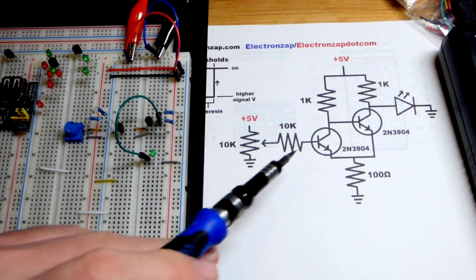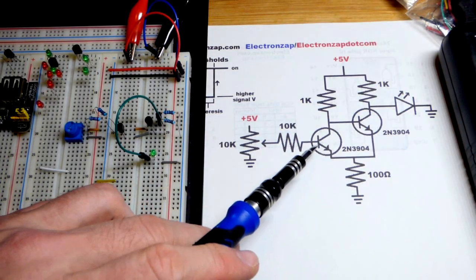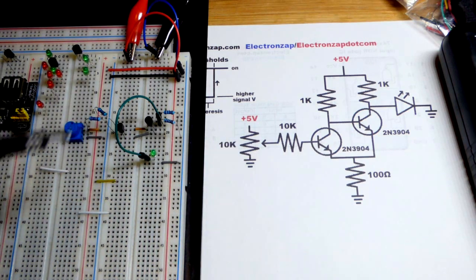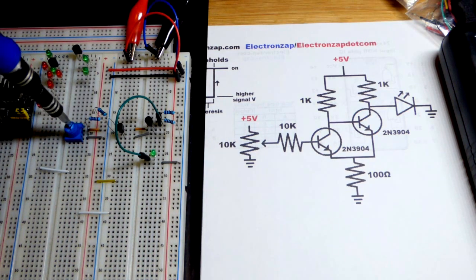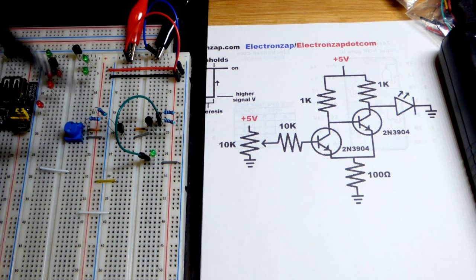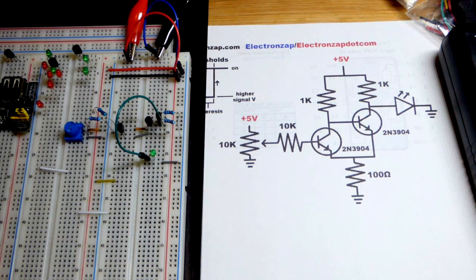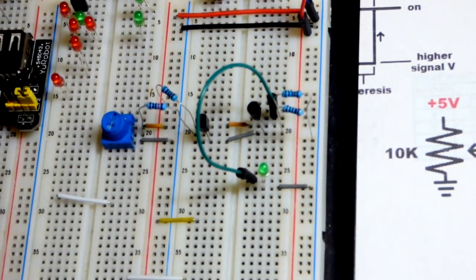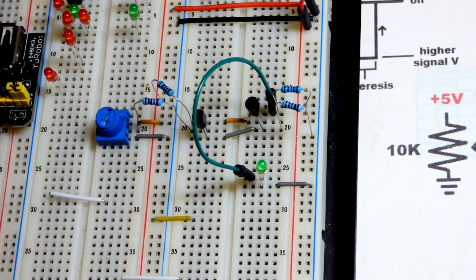In this video we're going to look at using a couple NPN transistors to make basically a voltage controlled switch. When I turn the voltage up the LED turns on, when I turn it down the LED turns off.